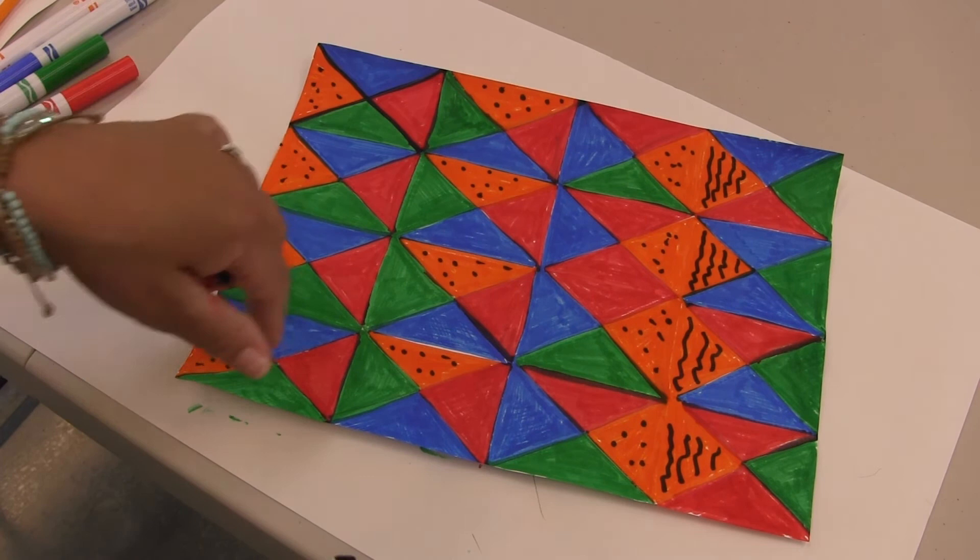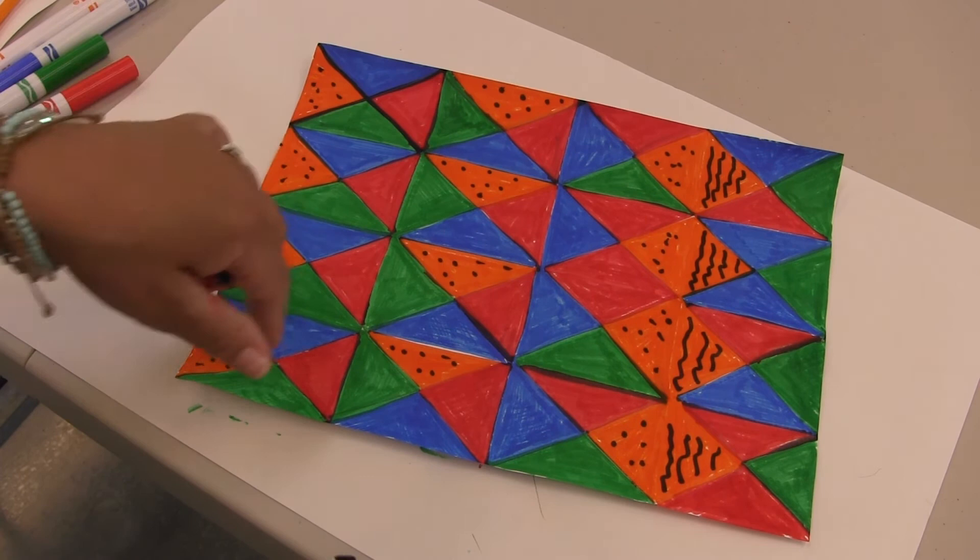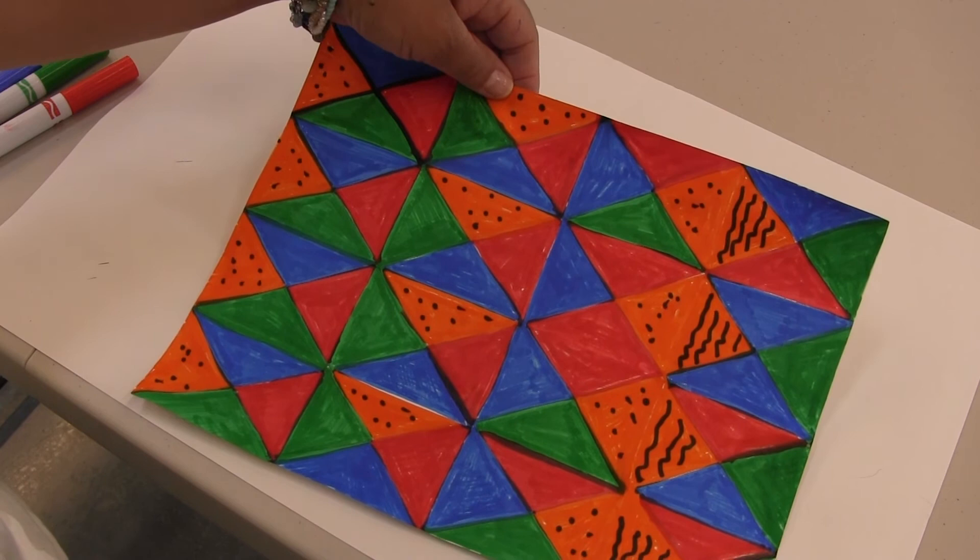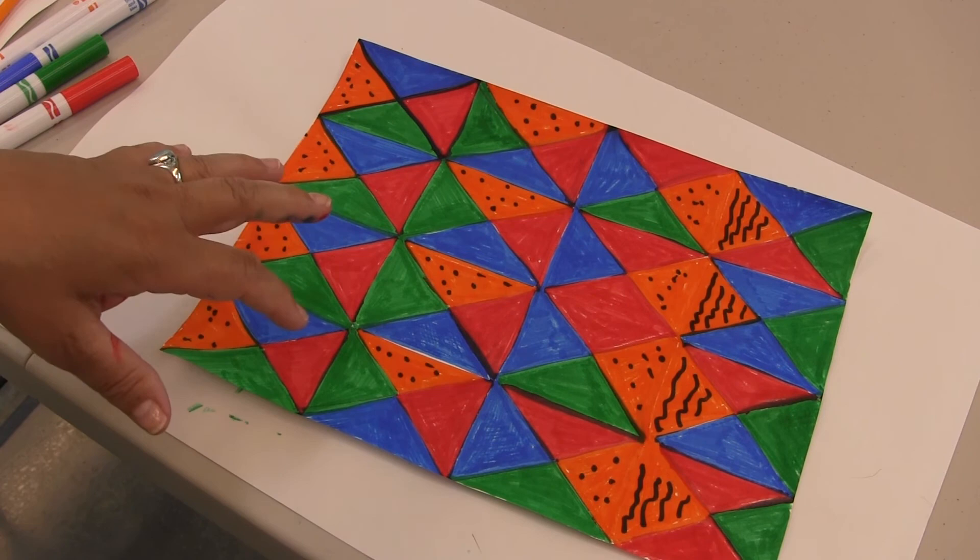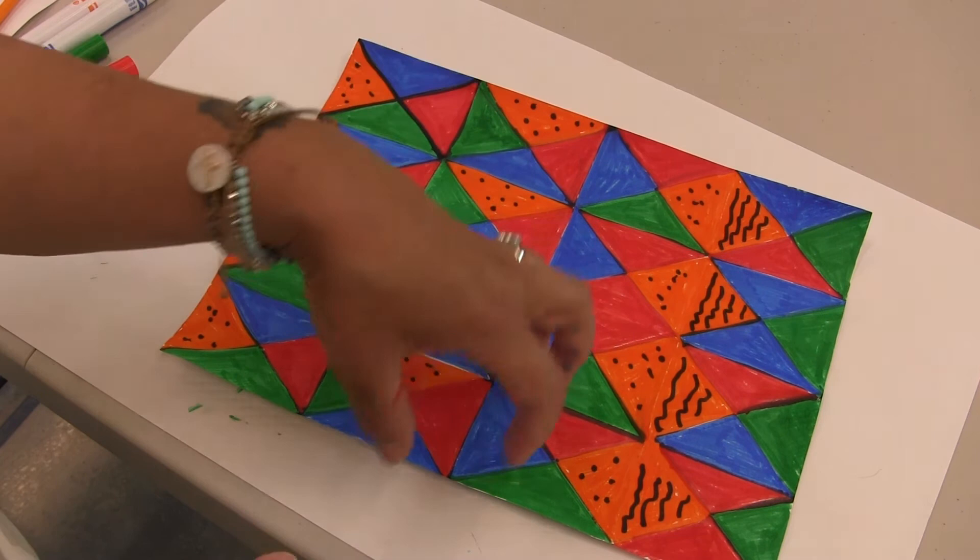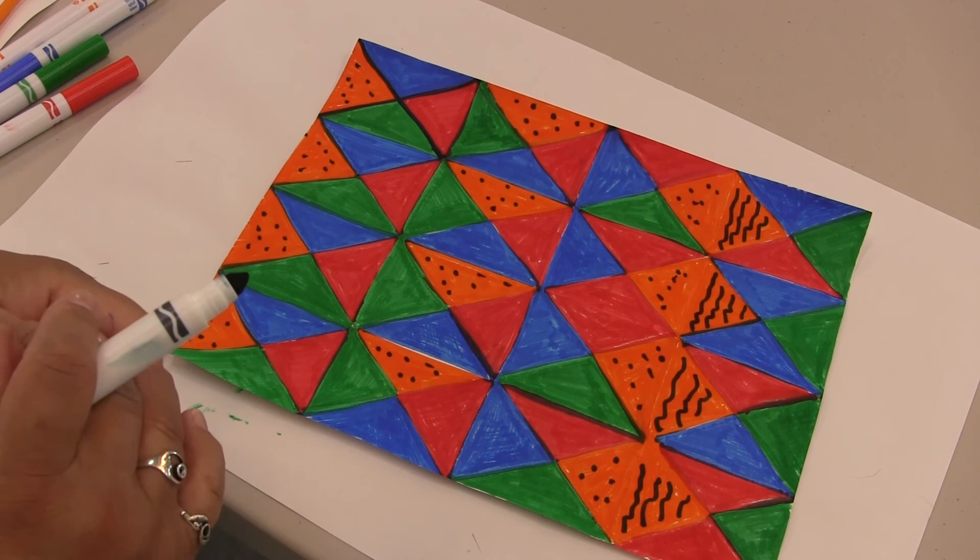Now I'm going to add all kinds of other designs on the other colors, and you can do as many designs as you want. But I do want you to add something on some of the colors. Don't just leave the colors because that's what makes a quilt look so pretty—there's a lot of things going on, lots of patterns. There's shapes, different shapes, and we're using as many designs as we can.